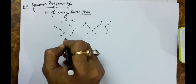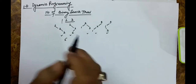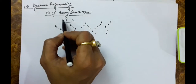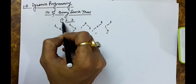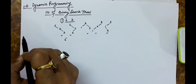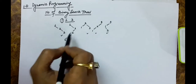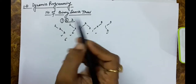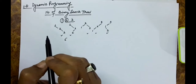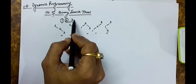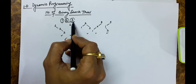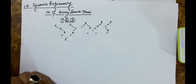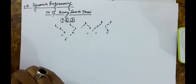The total number of binary search trees possible with these three keys is five. The process is: take one number as a root and find the total number of trees, then take the second number as a root and find total trees possible, then take the third number as a root and find the binary search trees.